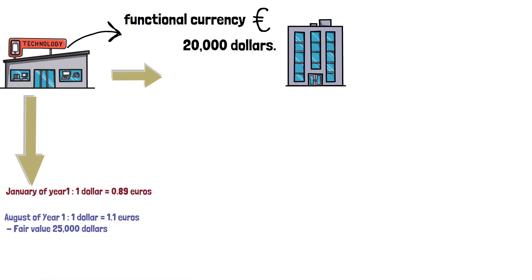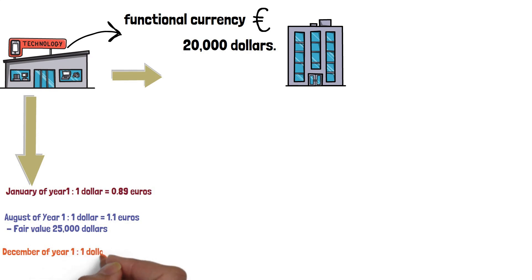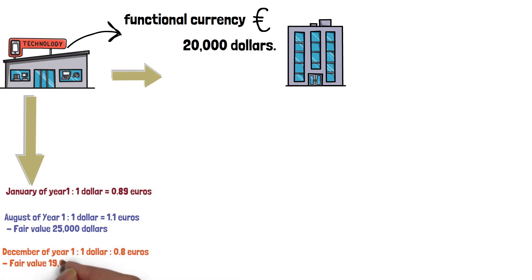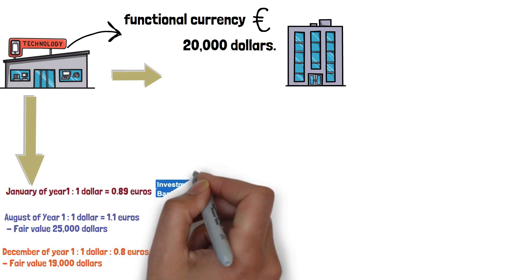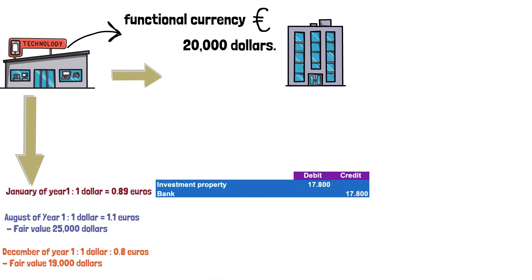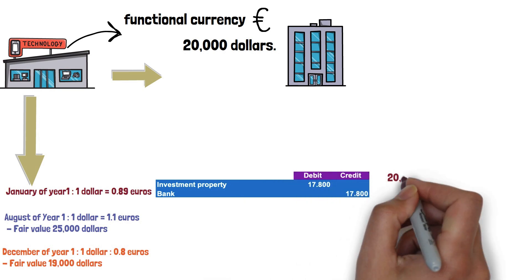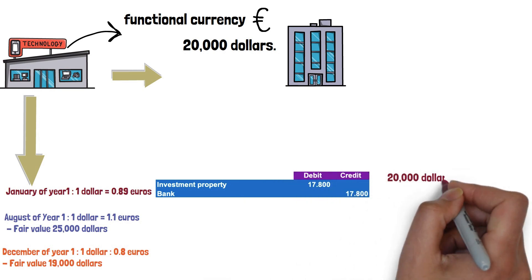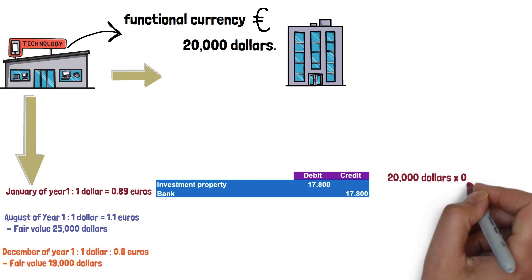In December of year 1, 1 dollar is equal to 0.8 euros, and the fair value equals 19,000 dollars. The accounting recognition is shown below. The initial recognition is an investment property for 17,800 euros.